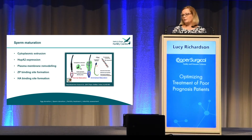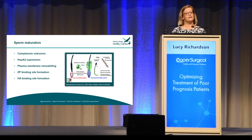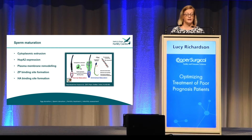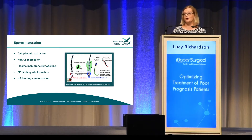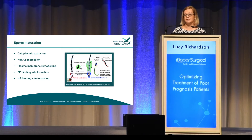Sperm has to undergo a number of dynamic changes in order for it to become a fully mature sperm. Maturity is important because an immature sperm in natural fertilisation cannot fertilise an egg. There are a number of key changes that sperm has to undergo: we see cytoplasmic extrusion, heat shock protein 2A2 expression, plasma membrane remodelling, and the formation of zona pellucida binding sites. And very importantly, we see hyaluronic acid — or HA — binding sites form. These binding sites are very important because this is how we enable the meeting of sperm and egg.